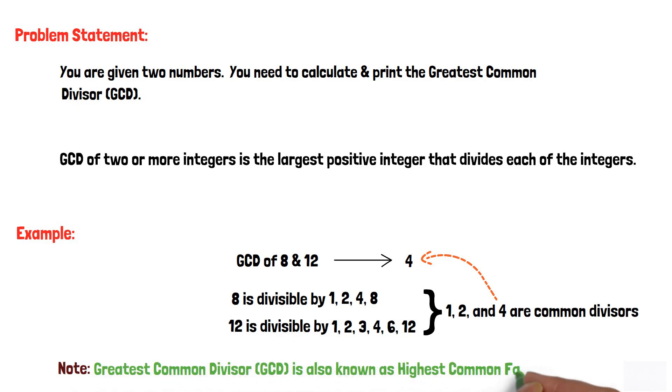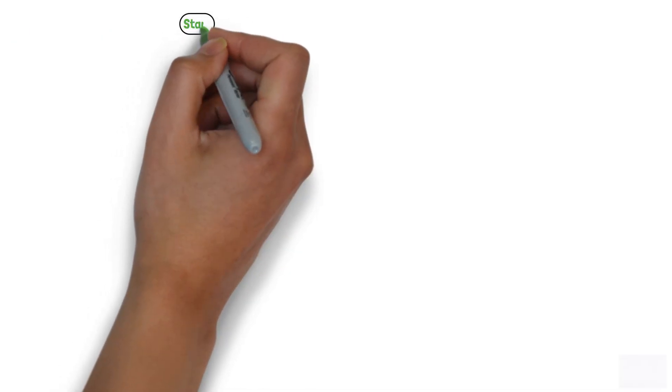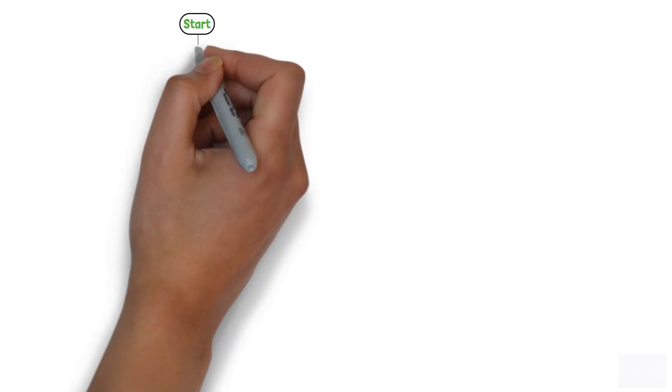Note that the greatest common divisor (GCD) is also known as the highest common factor (HCF). Now let's dive in to construct the flowchart. Firstly, we will create a starting terminator to indicate the beginning of the program.